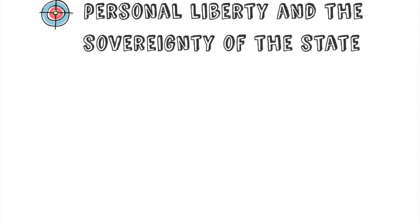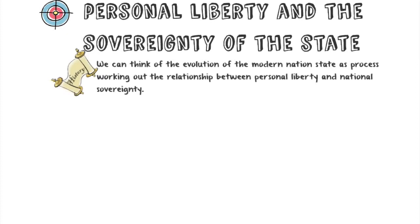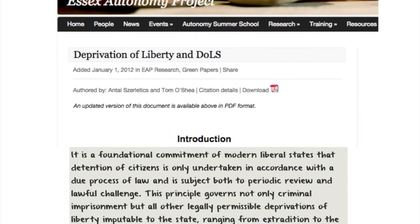To provide some context: when we think about the personal liberty of the private citizen and the power, the sovereignty of the state, I think of that as an evolving process within the modern nation. The modern nation state is what it is because of the evolving relationship between the individual person's liberty and the authority of the state. This is from an important article published by Essex University's Autonomy Project on deprivation of liberty standards. O'Shea says it's a fundamental commitment of modern liberal states that we only detain citizens in accordance with the due process of law.